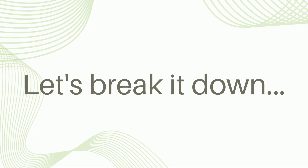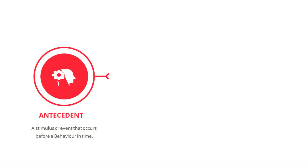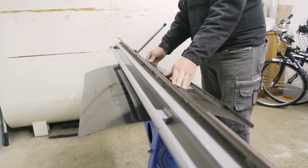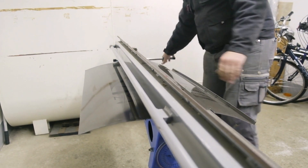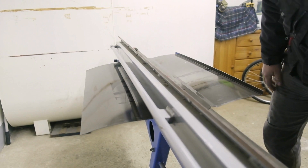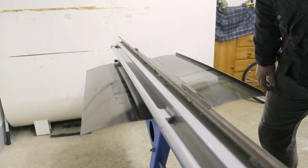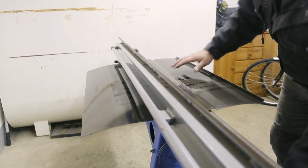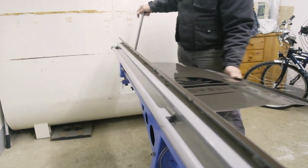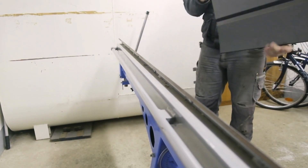Let's break it down. First up is the A — Antecedent. This is the trigger that sets the behavior in motion. It's like the spark that ignites the fire. Imagine an employee rushing through a task without proper safety gear. The antecedent here is the looming deadline and the rush to finish the task quickly.